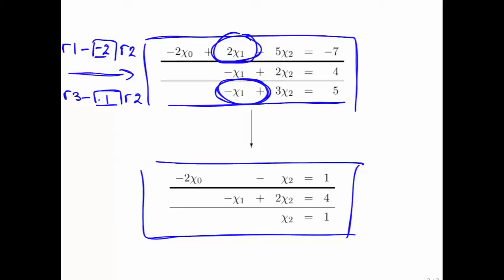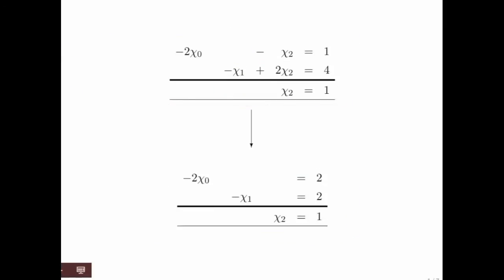And notice that that leaves the second row alone. And what you get is that this term and that term disappears. Let's do one more step. We now have the system that we arrived at in the previous step.